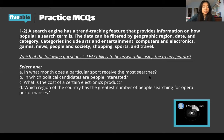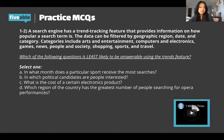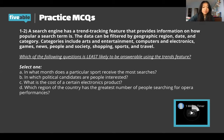The next question has a prompt: a search engine has a trend-tracking feature that provides information on how popular a search term is. The data can be filtered by geographic region, date, and category — categories include art and entertainment, computers, electronics, games, news, people, and society. The question is: which of the following is least likely to be answerable using the trends feature? Take 30 seconds.